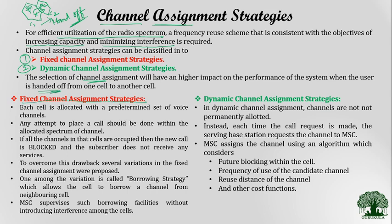In fixed channel assignment strategy, each cell is allocated a predetermined set of voice channels, and all these predetermined voice channels are allotted permanently. This cell can use only the channels allocated to it — that is a hard limit. Any user wanting to make a call in that cell can only use the channels allocated to that cell. If all the channels in that cell are occupied, then new calls are blocked, meaning a subscriber cannot receive any service. This is considered a major drawback.